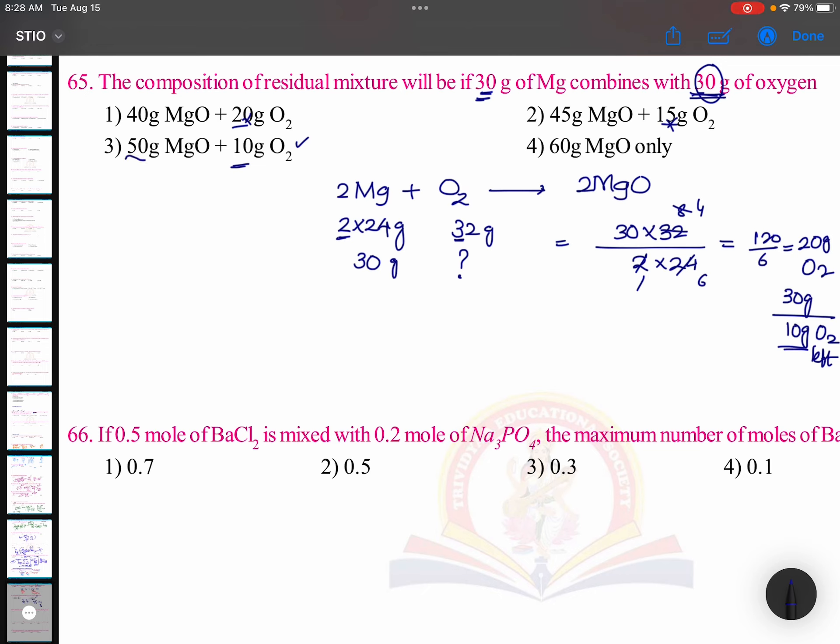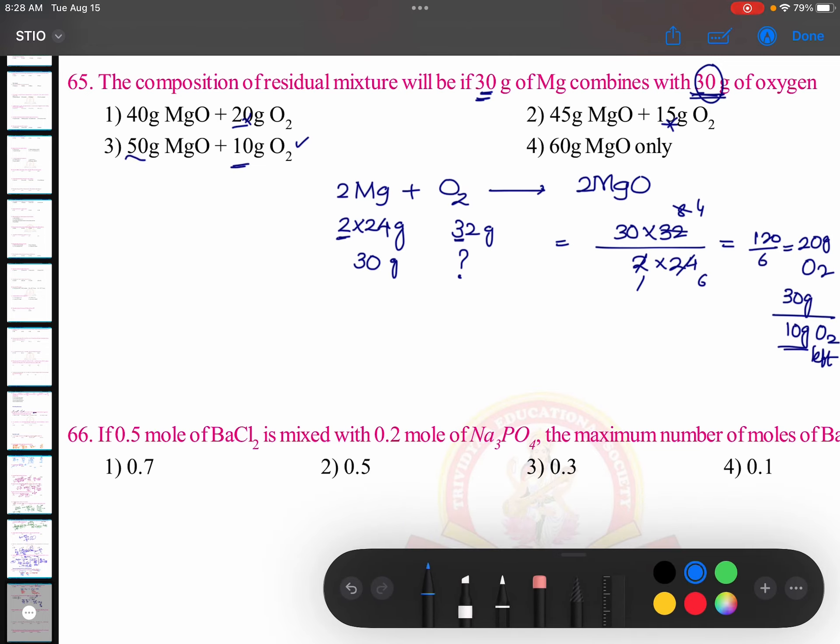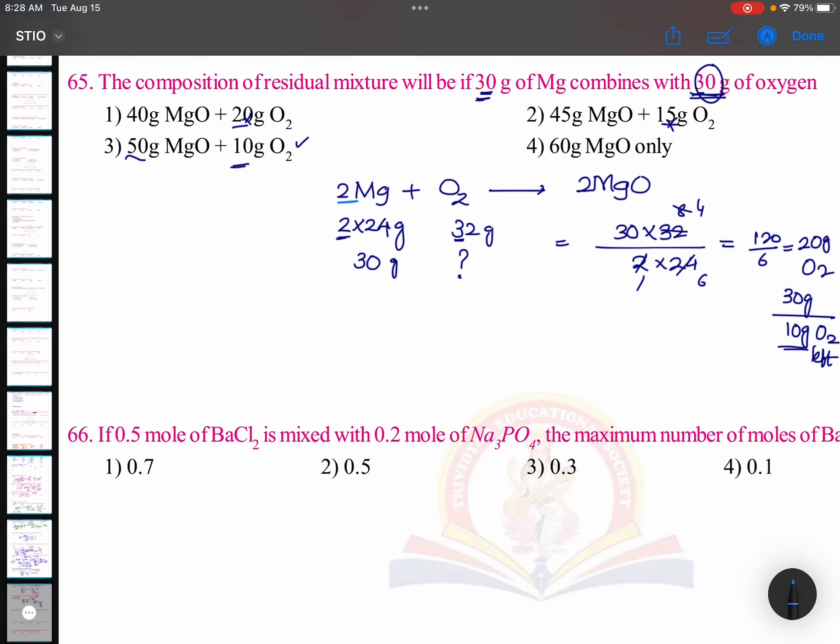But how you know that this is 50 grams? Then go for another calculation. 2 moles of magnesium, 2 into 24 gram of magnesium gives... Now this is the limiting reagent LR and this is excess.